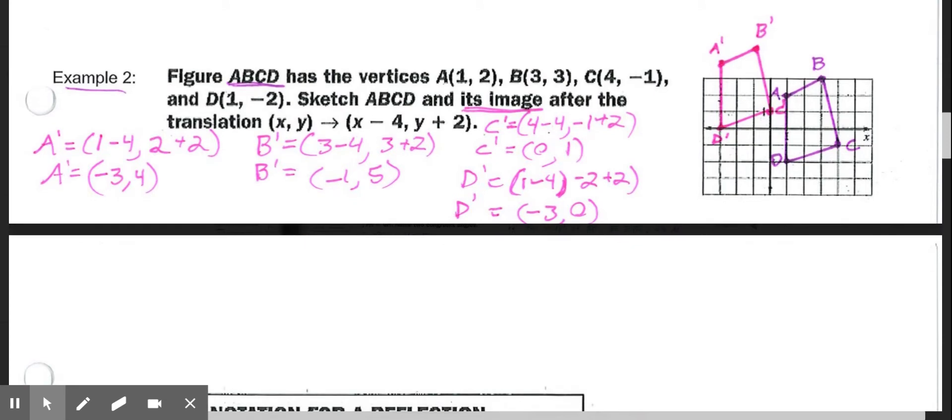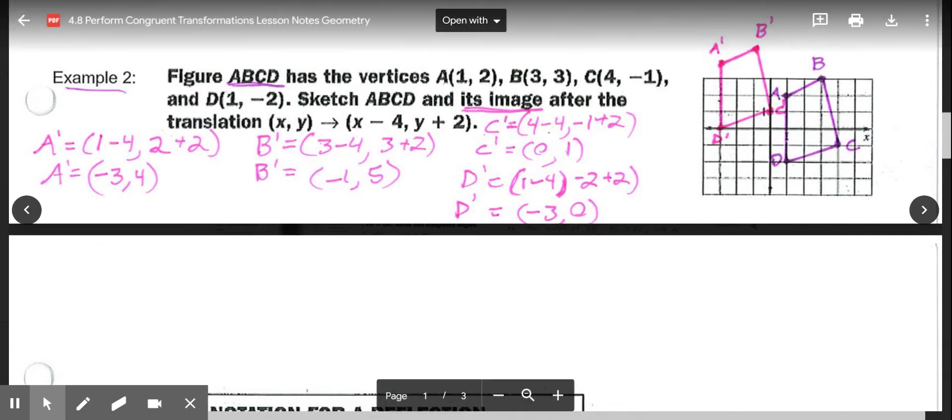Example two says figure ABCD has the vertices A at (1, 2), B at (3, 3), C at (4, -1), and D at (1, -2). So first thing it says is sketch ABCD. I'm going to sketch A, B, C, and D: A at (1, 2), B at (3, 3), C at (4, -1), and D at (1, -2).